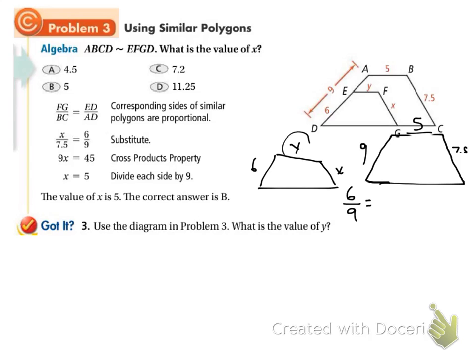So here's y. So y goes on the top because the top, we decided, was the smaller figure. And y matches up with the side 5. So now I've got a proportion set up and I can cross-multiply. 6 times 5 is 30. 9 times y is 9y. And when I divide by 9, we get that y is equal to 3.3 repeating.